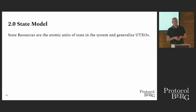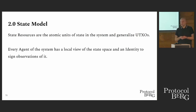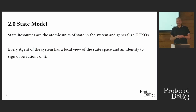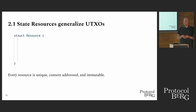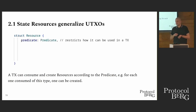Now we want a state model that fulfills the properties we like. State resources are the atomic units of state in our system, and we want them to generalize UTXOs in a well-defined sense. Every agent has a local view of the state space — a subset of the state resources in it — and agents also have identities to sign observations of the state space in their local view. Every resource is unique, content-addressed, and immutable. Immutability means once the resource is validated, it stays forever. Content addressing means we hash the whole thing, and that's the address in the system. We also have a predicate, which gives us more generalizability.